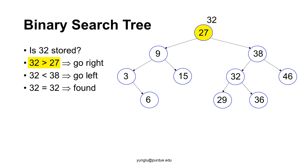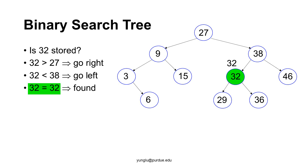In the second example, we want to search for 32. First, we compare 32 with the root, which stores 27. Since 27 is smaller than 32, we search 32 in the right subtree. Next, we compare 32 with 38. Since 32 is smaller than 38, we search 32 in the left subtree. We have found 32 in the tree.